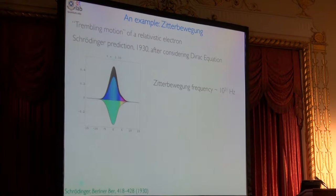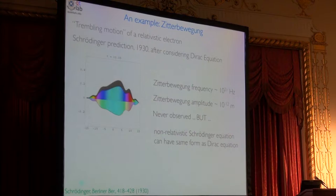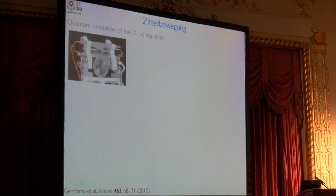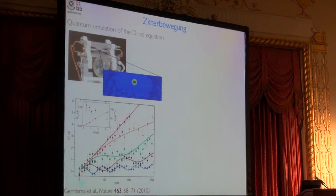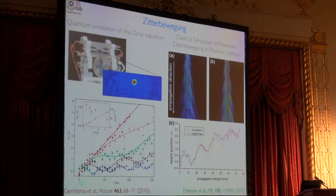It's just oscillatory motion as you go along. The frequency is very fast, 10 to the 21 hertz. The amplitude is very small. It's 10 to the minus 12 meters. So it's never been observed. But a few years ago, people realized the Dirac equation has the same form as the non-relativistic Schrodinger equation and that you can emulate in the lab. So Rainer Blatt's group did that with an ion trap.